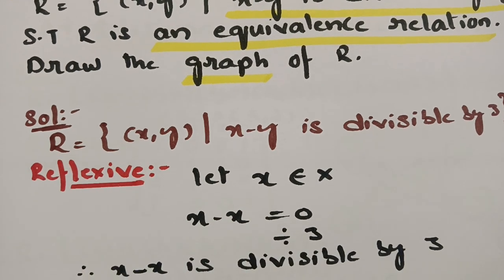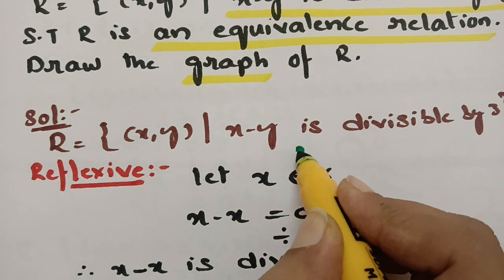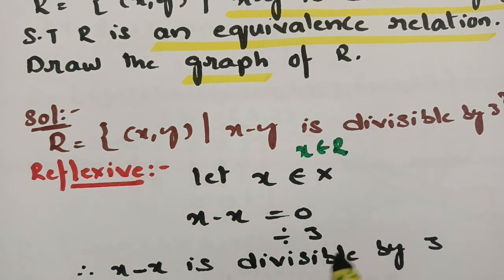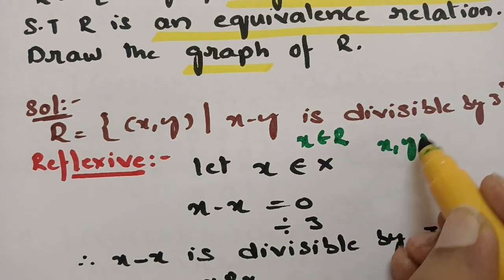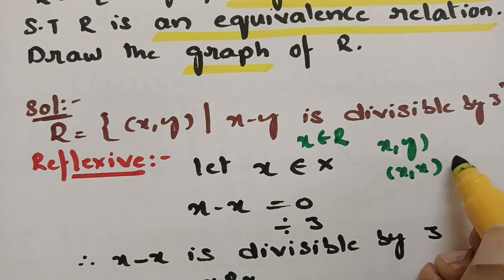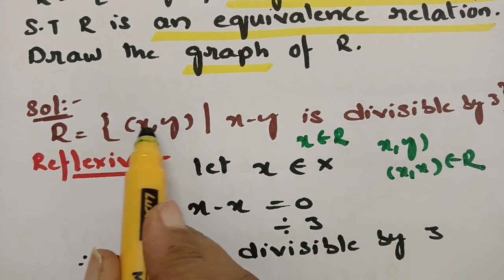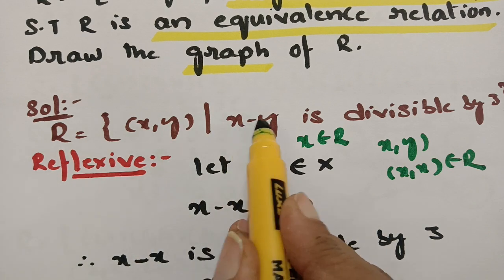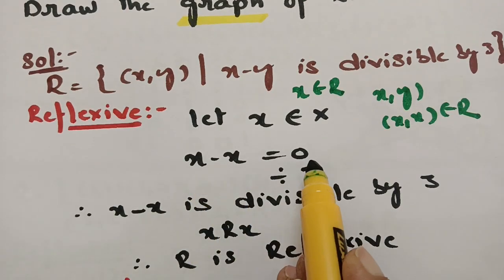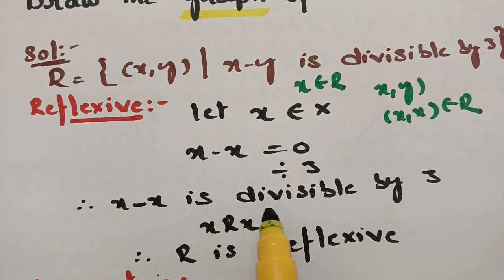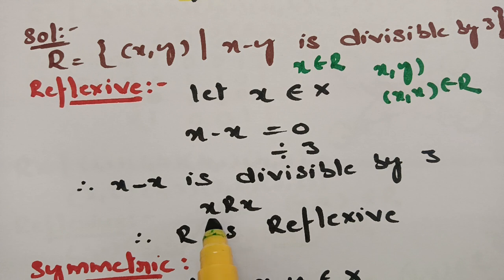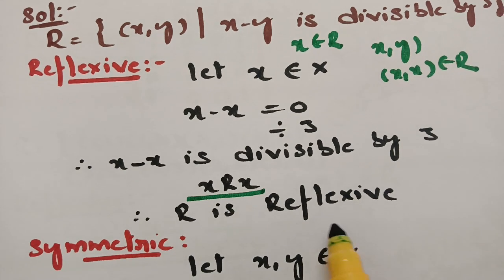For reflexive: take x belonging to X. Consider (x, x) belongs to R. Then x minus x equals 0, and 0 is always divisible by 3. Therefore x minus x is divisible by 3, and therefore x is related to x. Hence R is reflexive.